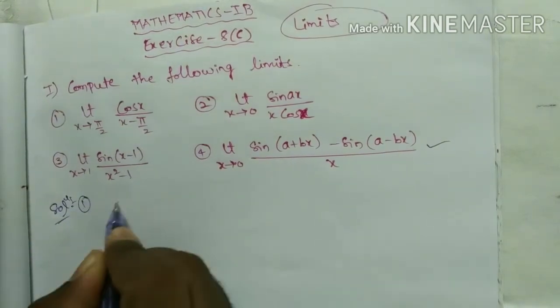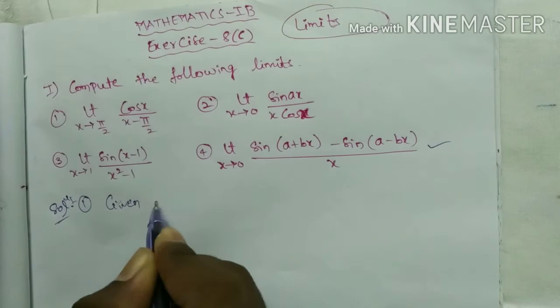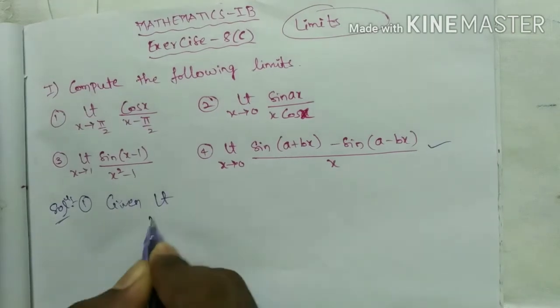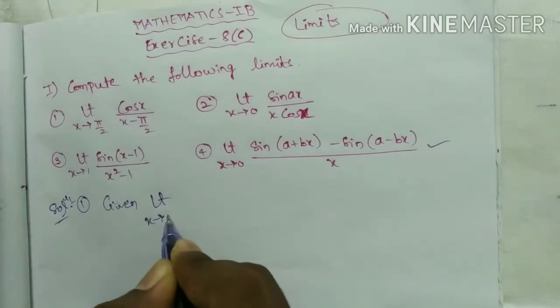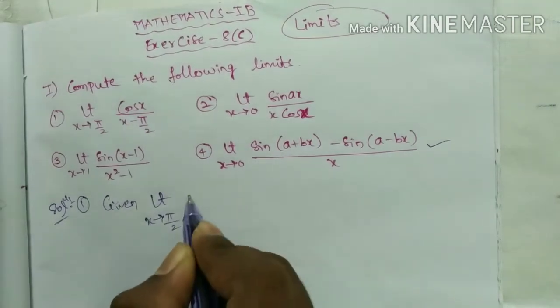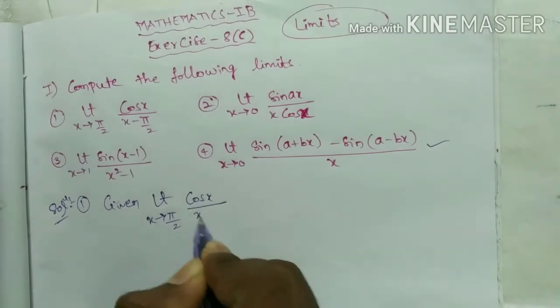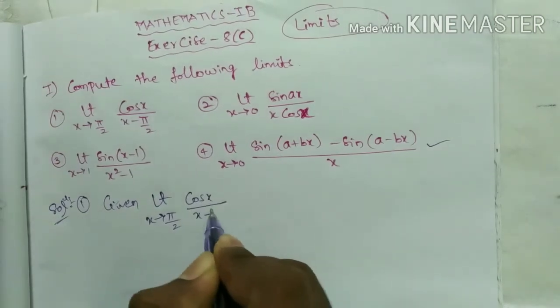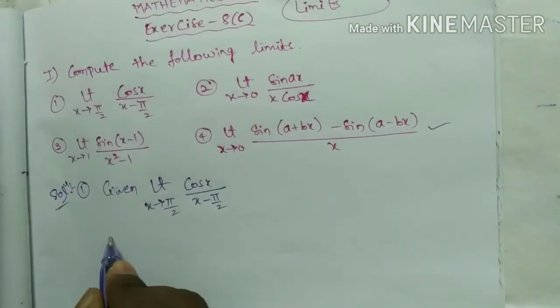Solution number one. Given: limit x tends to π/2 of cos x / (x − π/2).